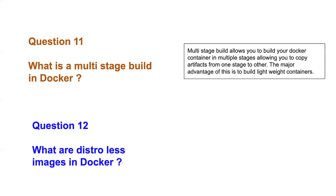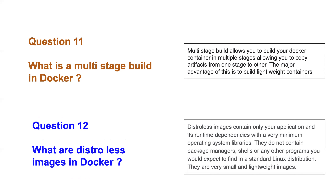Question twelve: what are distroless images in Docker? Distroless images are very lightweight Docker images. You might wonder why we need them if Docker images are already lightweight. Consider a 500-600 MB container running in production — it may contain package managers like yum or apt that are never actually used in production, since you're not upgrading libraries on a running production container.